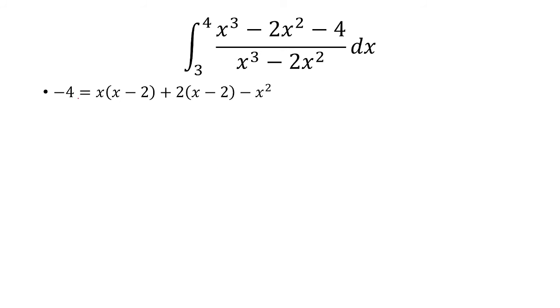So now we just need to bring it all together. This is the coefficient of a, b, and c. So I'm just going to multiply both sides, or rather divide both sides, by x cubed minus 2x squared.